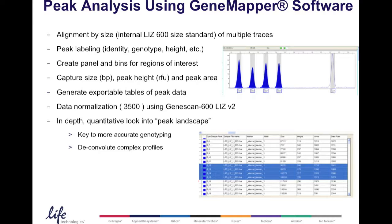In other words, you can get a really deep, quantitative look into the peak landscape. That is key to more accurate genotyping and allows you to deconvolute complex profiles.